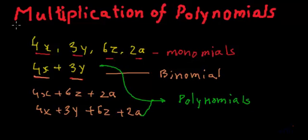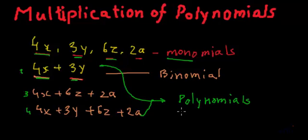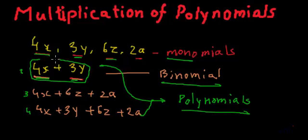So to summarize: expressions with only one term are called monomials. Expressions with two or more terms — whether two, three, or four terms — are called polynomials. And binomial is the special name given to expressions which have exactly two terms. This was our revision about different types of expressions in algebra.